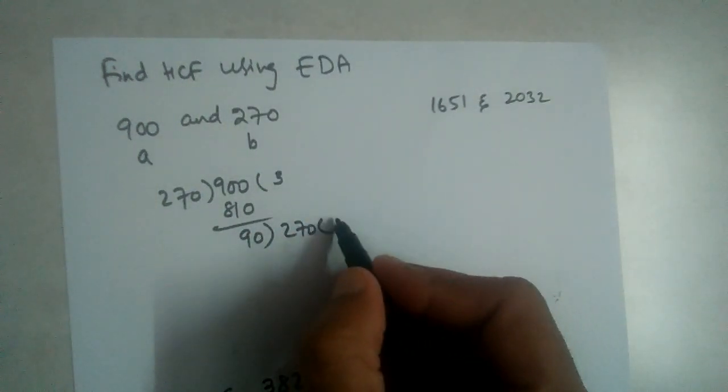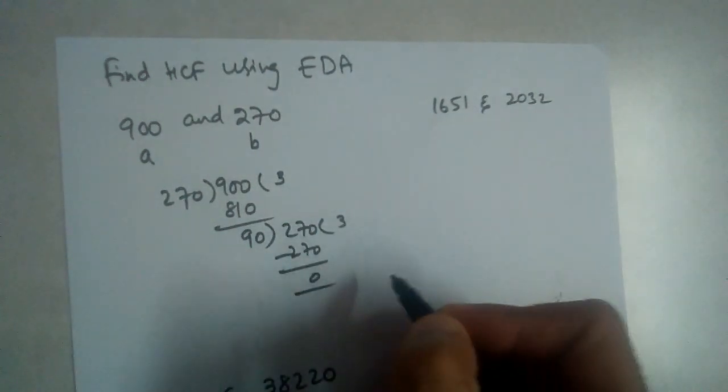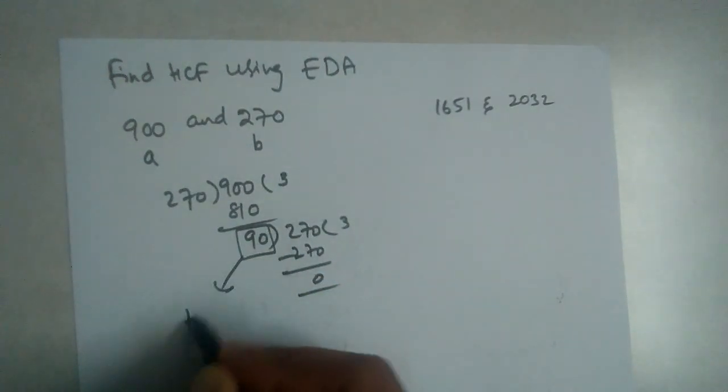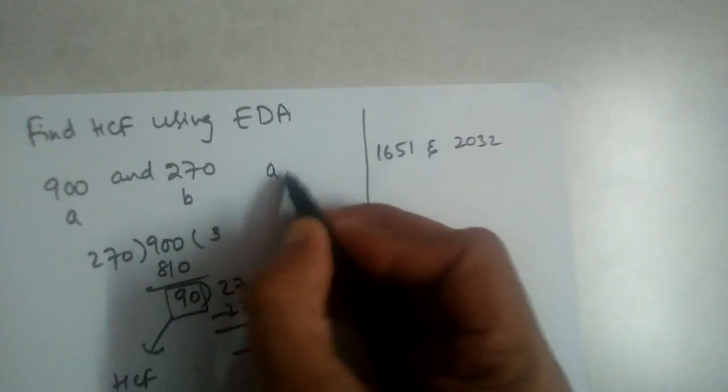This will be 3 times 270, so this is the HCF. Of course, you can use this method.